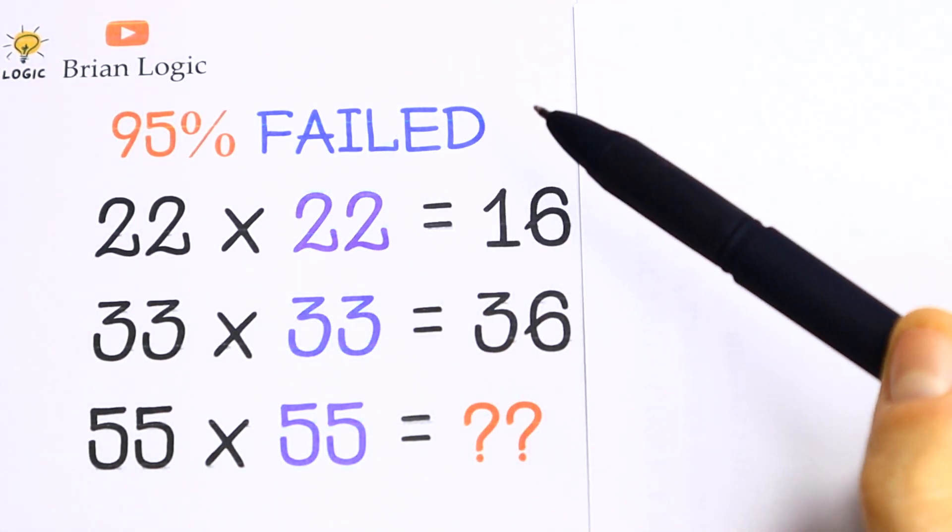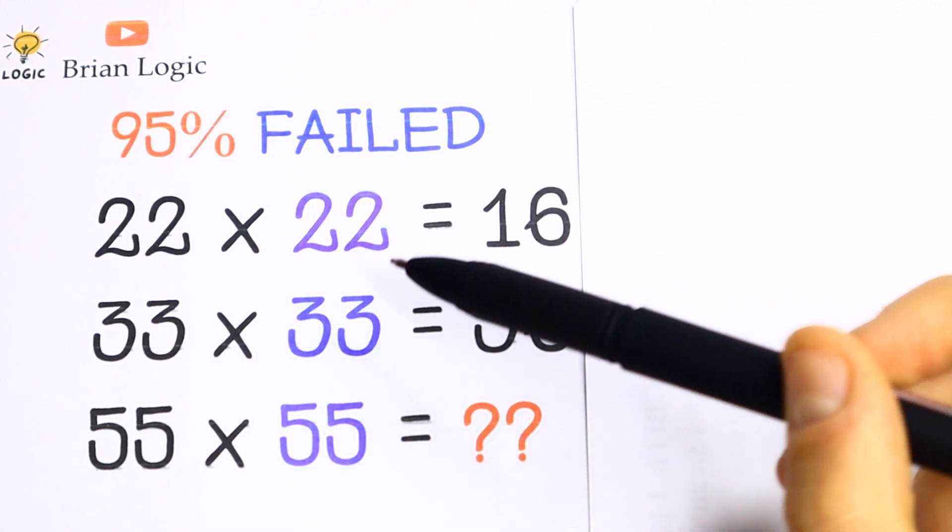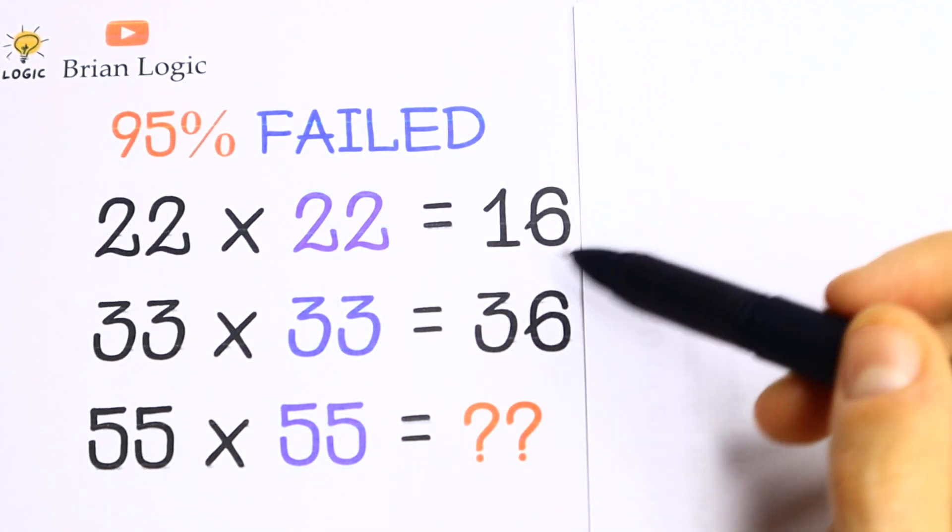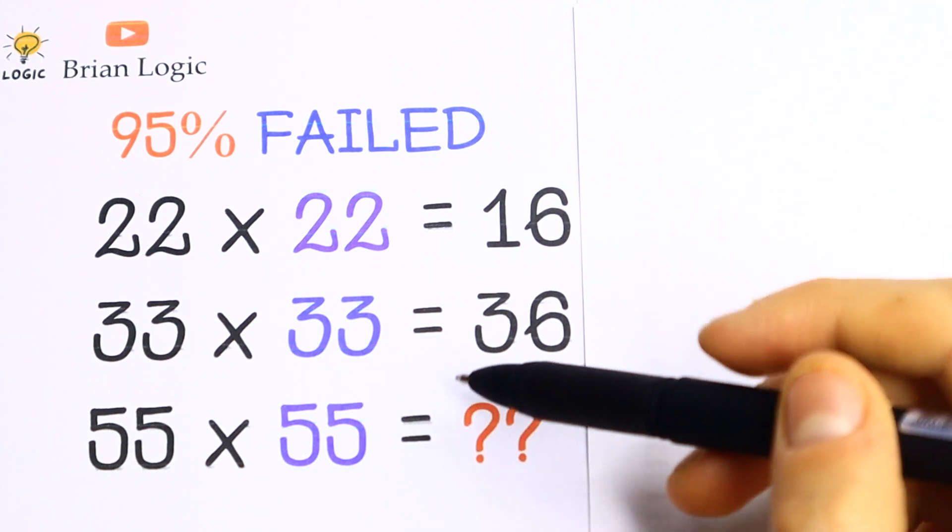We know that 22 times 22 equals 16, 33 times 33 equals 36, and we need to find what will equal 55 times 55.